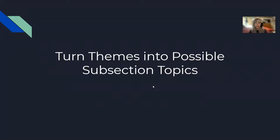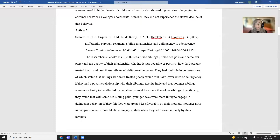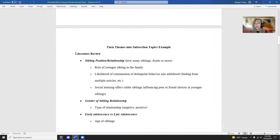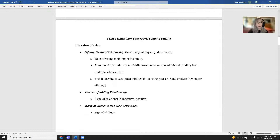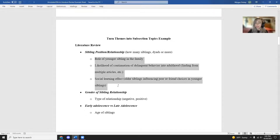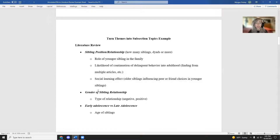From there, we're going to take those main themes, condense and refine them a little bit, and turn them into possible subsection topics or headings for your lit review. You probably saw this in your own research — lit reviews often break down into variables or subsection topics. As an example, my basic outline uses bullet points to plot out what my variables would look like, with general notes about the information related to each variable.